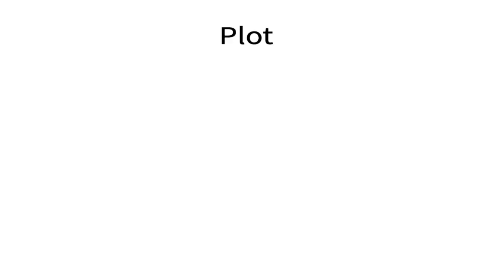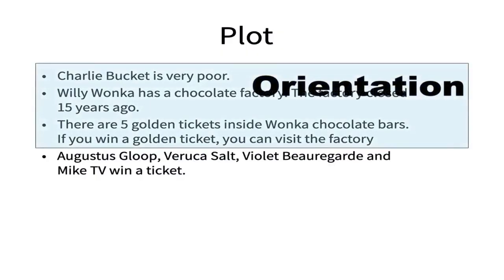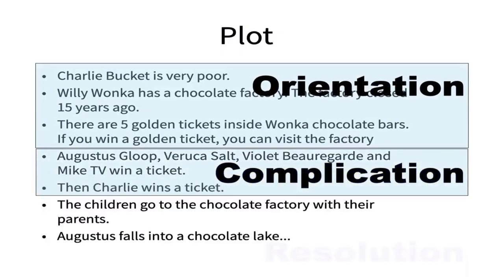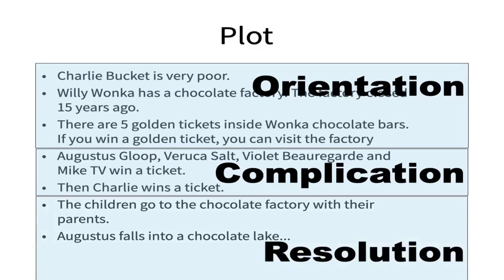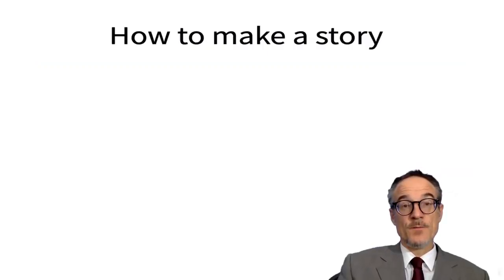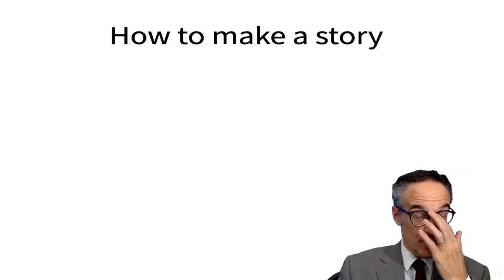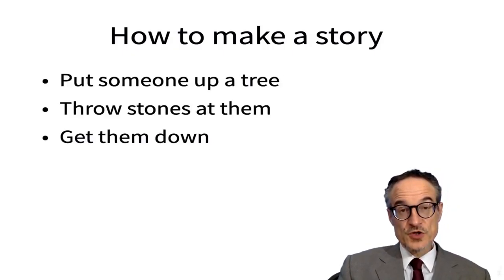If you're writing a story, these systems are not so important. If you're writing a story, we have a plot. The plot has different parts. So in the case of Charlie, this is kind of the orientation. The complication comes next — they all get tickets. There's a conflict between Charlie and the other children, and the rest of the story is the resolution. They don't have to be fixed sizes. The complication can be quite short, the resolution can be long, the orientation can be as long as it needs to be.